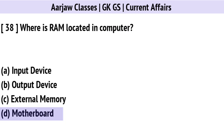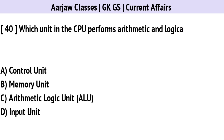Where is RAM located in a computer? The correct option is D: Motherboard.